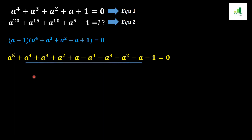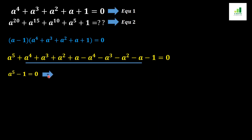Now we can see that the middle terms cancel out entirely: plus a to the power 4 and minus a to the power 4 cancel; plus a cubed and minus a cubed cancel; plus a squared and minus a squared cancel; plus a and minus a cancel. As a result the whole expression simplifies to a to the power 5 minus 1 equal to 0.